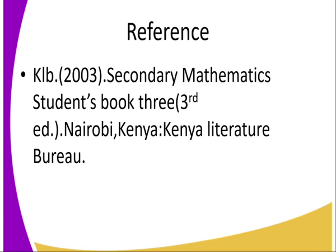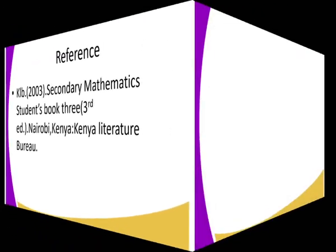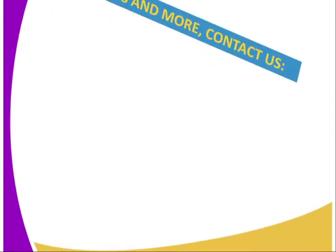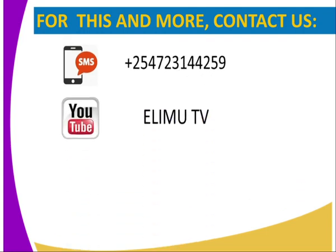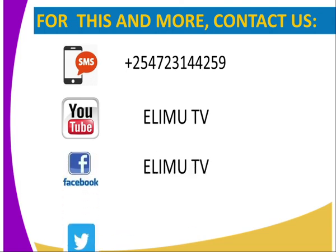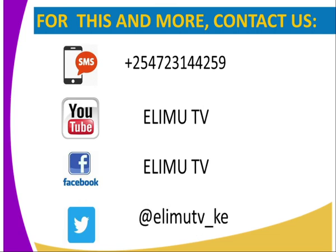You can get more information from the KLB 2003 secondary mathematics student book 3 third edition. Or you can contact us through the SMS signals, through the number that is on the screen. We also have YouTube. You can get us through ELIMU TV. You can get us through Facebook. You can also get us through Twitter. Otherwise, have a nice time. Stay tuned to ELIMU TV. Thank you.